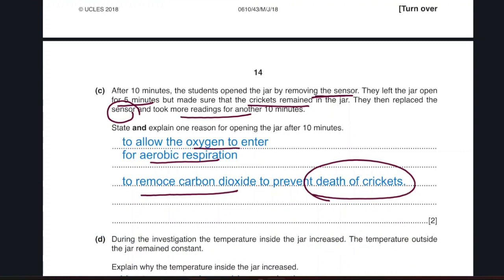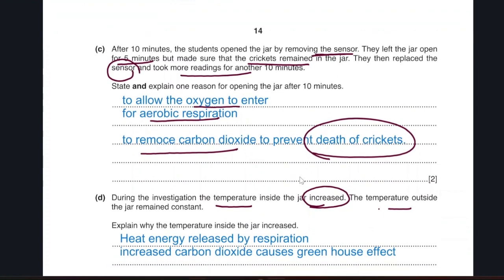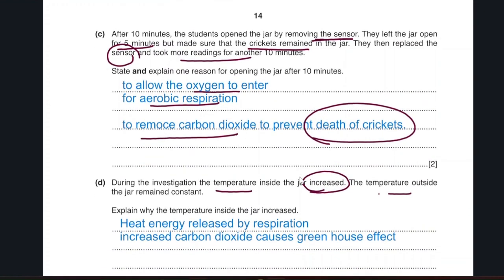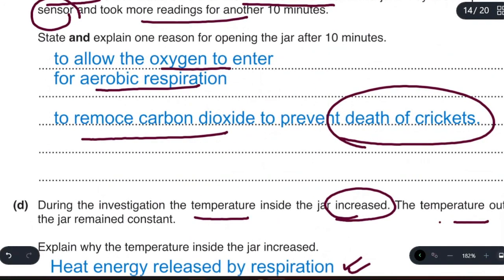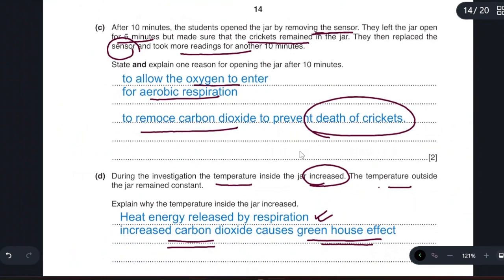During the investigation the temperature inside the jar increased while the temperature outside remained constant. As we said before, respiration releases heat energy. So heat energy increases the carbon dioxide gas which may also cause greenhouse effect. The increased CO2 traps more heat energy. I have two reasons: heat energy is released from respiration, also respiration releases carbon dioxide which traps the heat energy causing greenhouse effect. We had two marks here so we had to write two points.